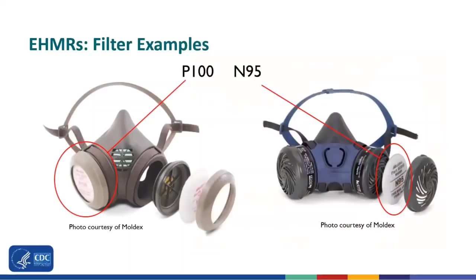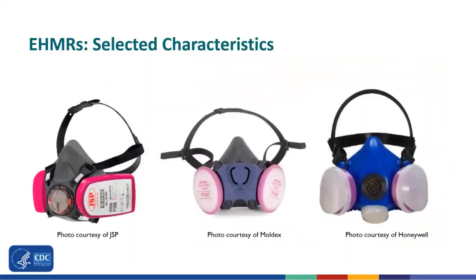Most elastomeric respirators in the U.S. marketplace come equipped with a P100 filter, although they can also be equipped with an N95 filter. Other important characteristics include the type of cover over the filter. A hard case around the filter may be important when disinfecting the outside surface, as it helps prevent the filter material on the inside from becoming wet.